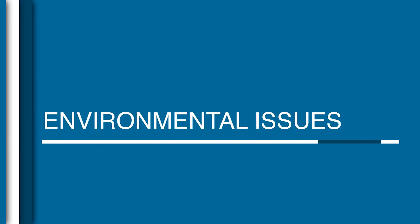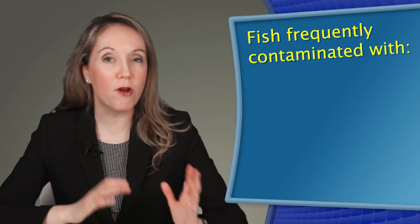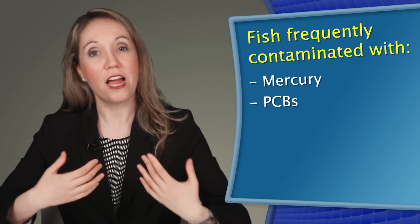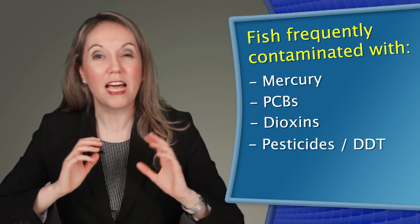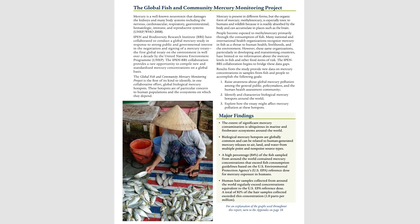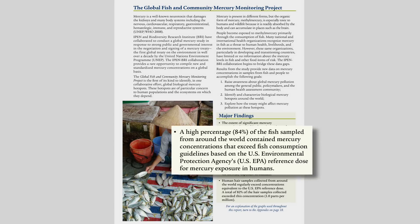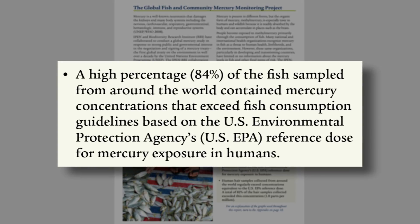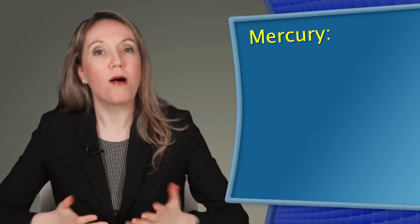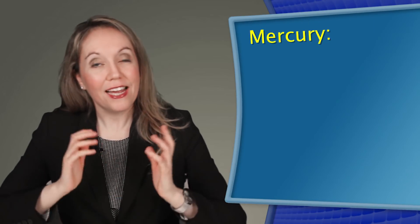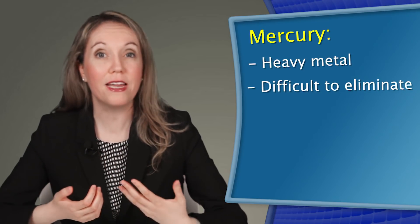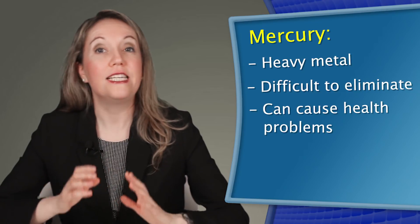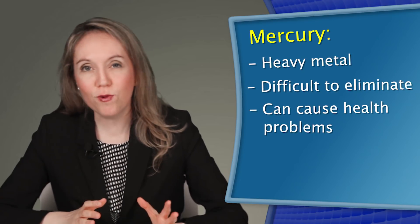Fish are frequently contaminated with things like mercury, PCBs, dioxins, as well as pesticides like DDT. A recent study that sampled fish from around the world actually found that 84% of them had unsafe levels of mercury. 84% of them! And what's the problem with mercury? Well, it's a heavy metal that's very difficult to eliminate from the body once it's ingested. It can cause problems depending on where it accumulates.